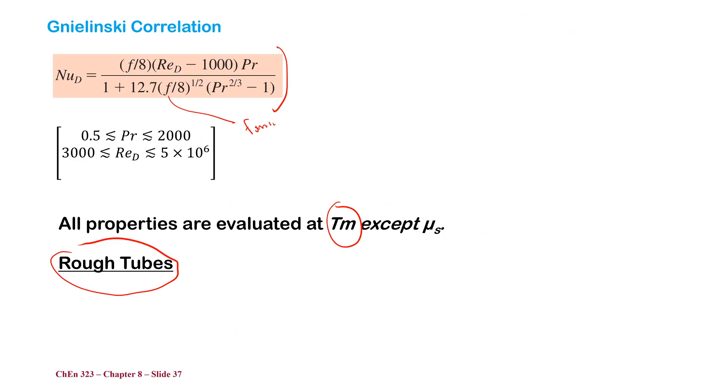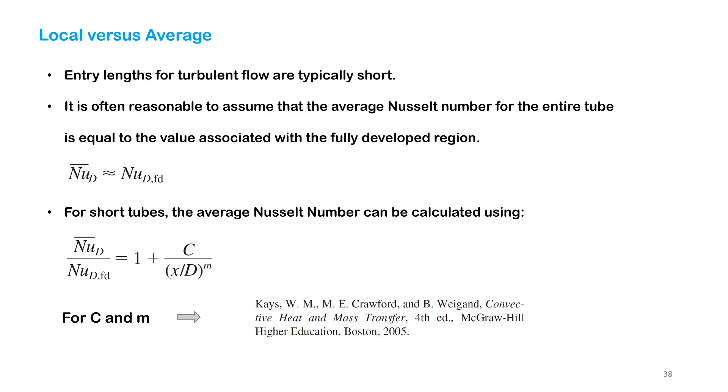If you have a rough tube, F is also a function of roughness, epsilon over D. So if you have a rough tube, you don't have any other option—you need to use this equation. The next question is how do we go from local to average?